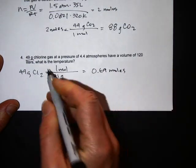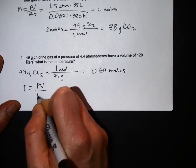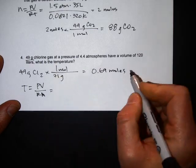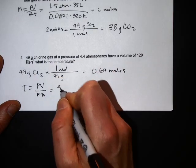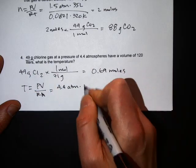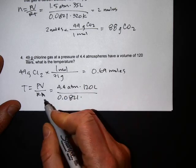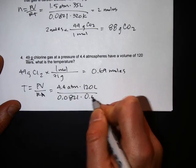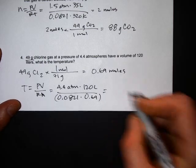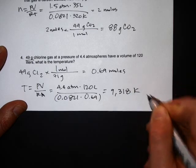And now you can plug it into the ideal gas law and solve for temperature. Temperature equals PV over RN. The pressure in this question is 4.4 atmospheres, the volume is 120 liters, the R for atmospheres is 0.0821, and the number of moles we found is 0.69. So if you divide, you will find the answer is pretty high temperature, 9318 kelvin.